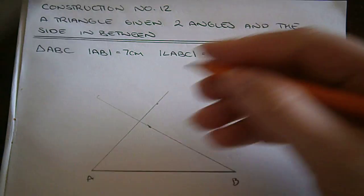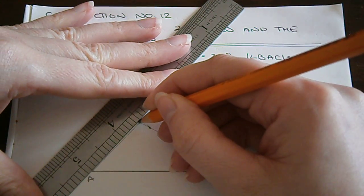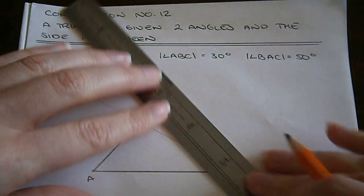So the point of intersection, this is our point C and we can make these lines heavier now.